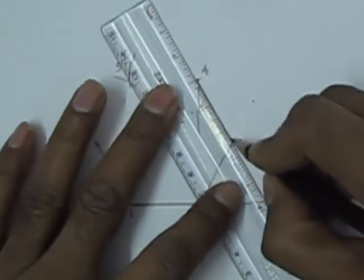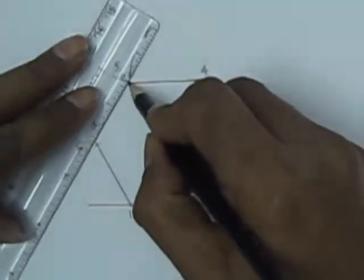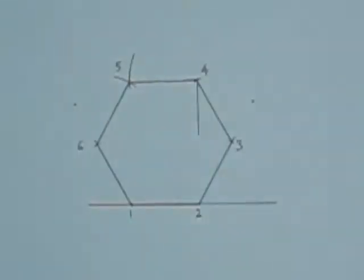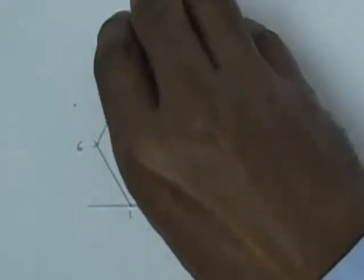So now we have a regular hexagon ready with corners 1, 2, 3, 4, 5 and 6. All sides are 30 mm in length.